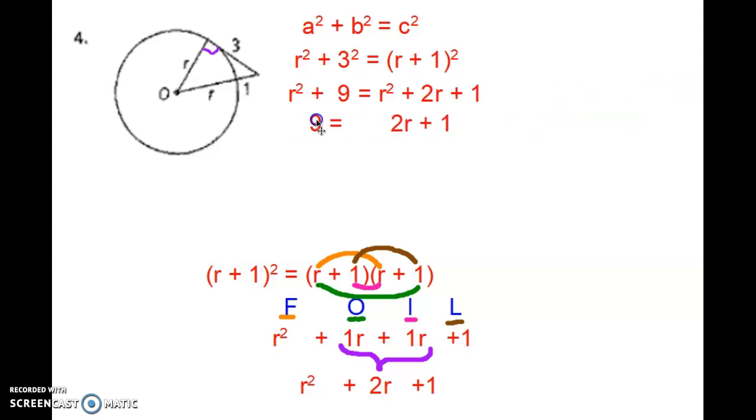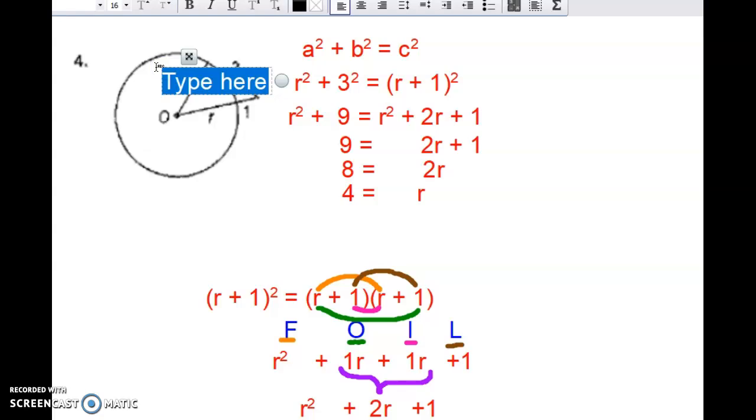Well, if I subtract an r² from both sides, they go away. Now I'm going to subtract a 1 and I get an 8. Now when I divide by 2, I'm going to get a 4. So r happens to be a 4. And if I did put a 4 right there, four plus one is five. Three, four, five. That's a Pythagorean triple.